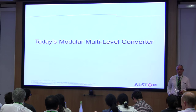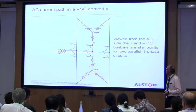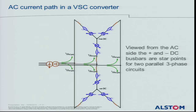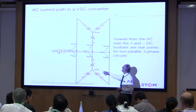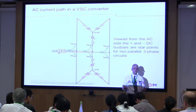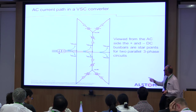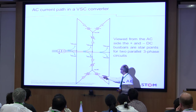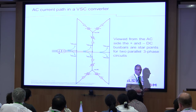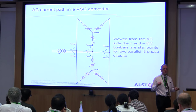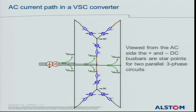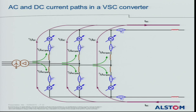Today's modular multi-level converter — basically, if you take two STATCOMs, each with three power converter valves interconnected in a star arrangement, and put two of those in parallel without grounding the neutral point, you can generate a voltage difference between those neutral points. If you redraw the circuit, you've got an HVDC converter — it's the same circuit.